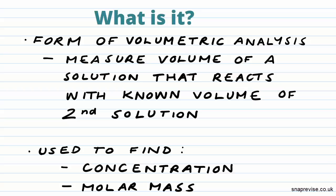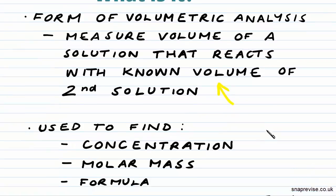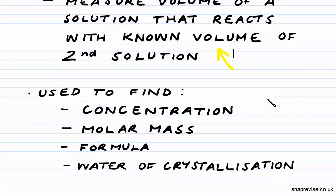So this known volume of a second solution would be our standard solution. Now we can use this titration, this reaction, to find some unknowns. These unknowns could be a concentration of our solution, the molar mass, the formula, the water of crystallization. There really are numerous unknowns that we could find.